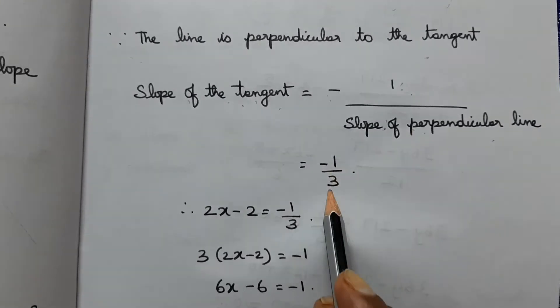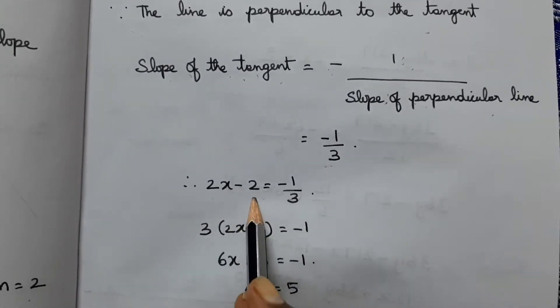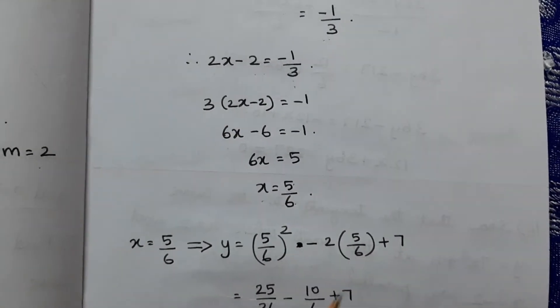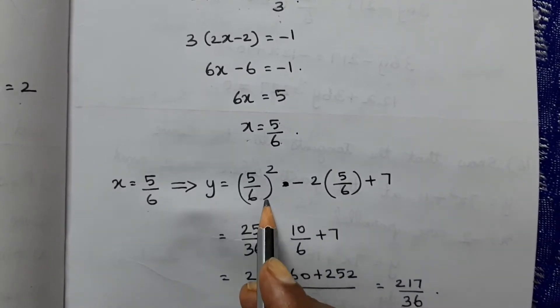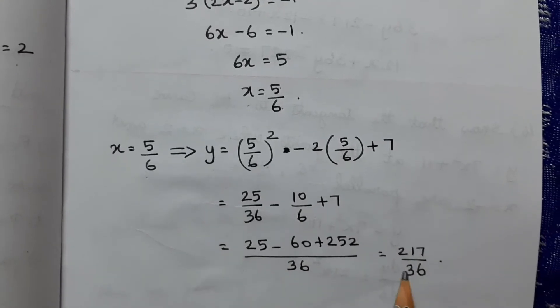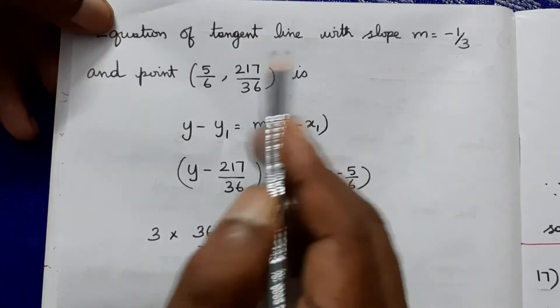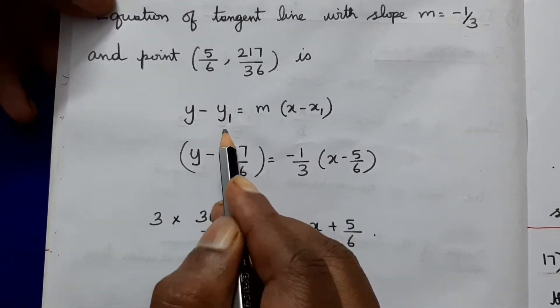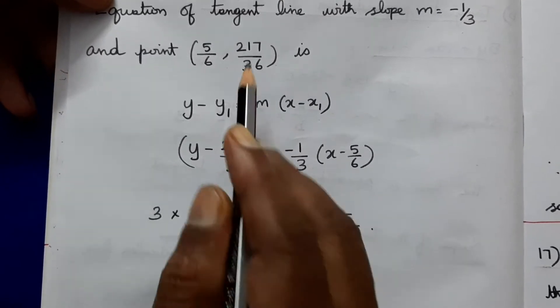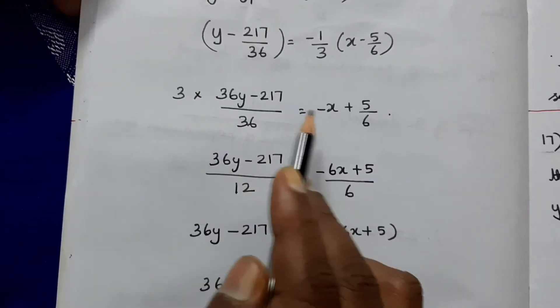Setting dy/dx = 2x - 2 = -1/3, we get 2x = 2 - 1/3 = 5/3, so x₁ = 5/6. Substituting x = 5/6 into y = x² - 2x + 7 gives y₁ = 217/36. The point of tangency is (5/6, 217/36).